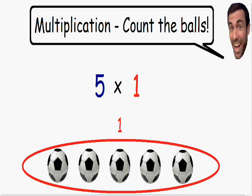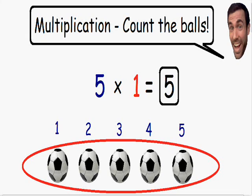So how many balls do we have in total? Well we have the same amount as we started with — we have 5 soccer balls in total. So 5 times 1 is equal to 5. Anything times 1 is equal to itself. 5 times 1 is 5, 6 times 1 is 6, a million times 1 is a million. So that gives you an idea of what happens when we multiply by 1.